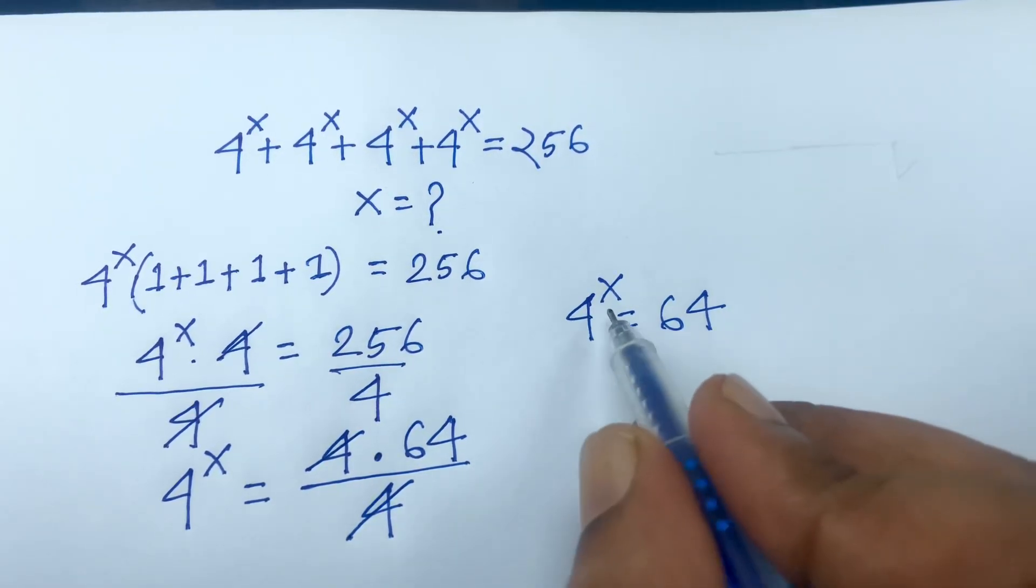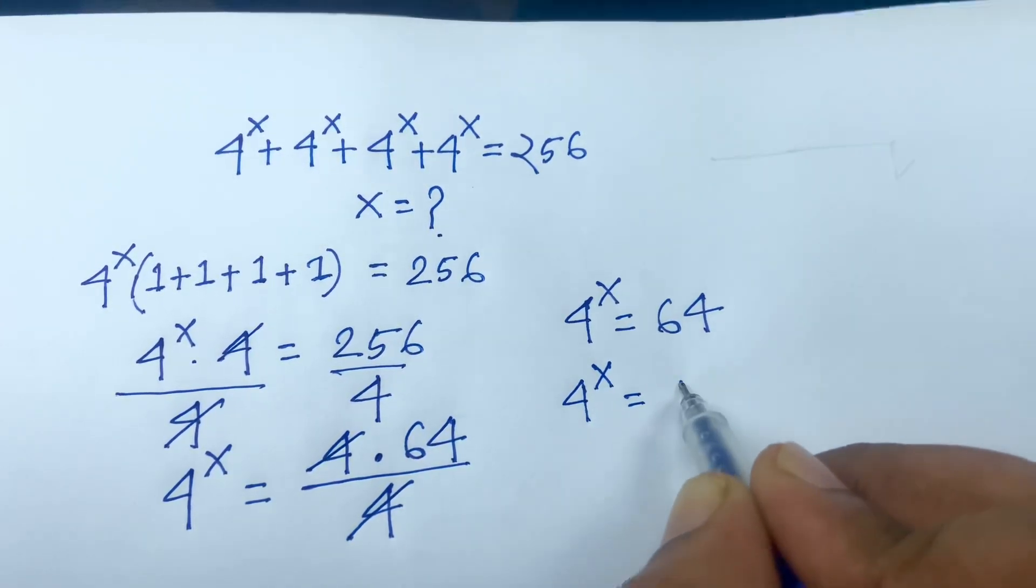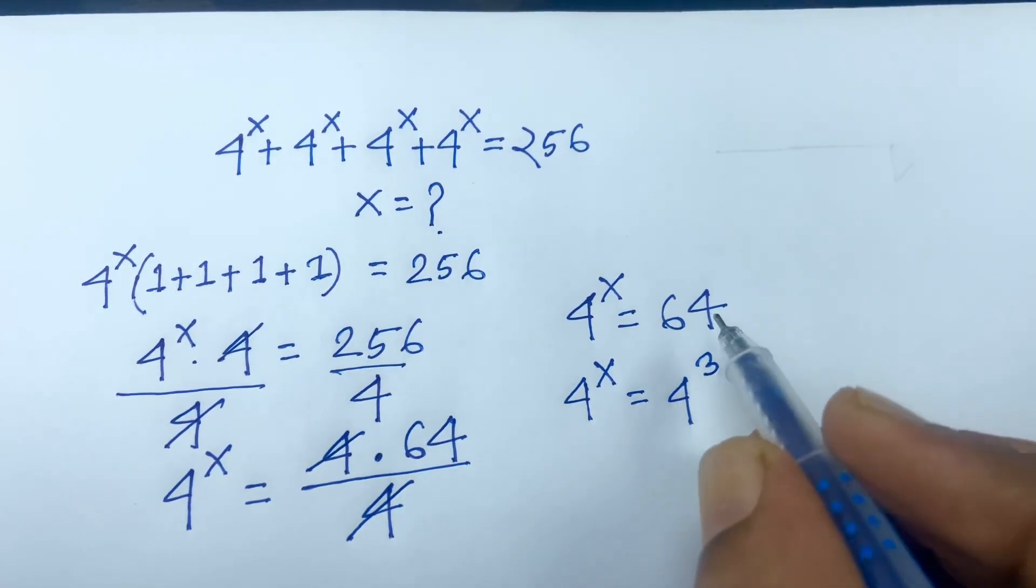Now, at this moment, I can say 4 to the power x equals 64, which is 4 to the power 3.